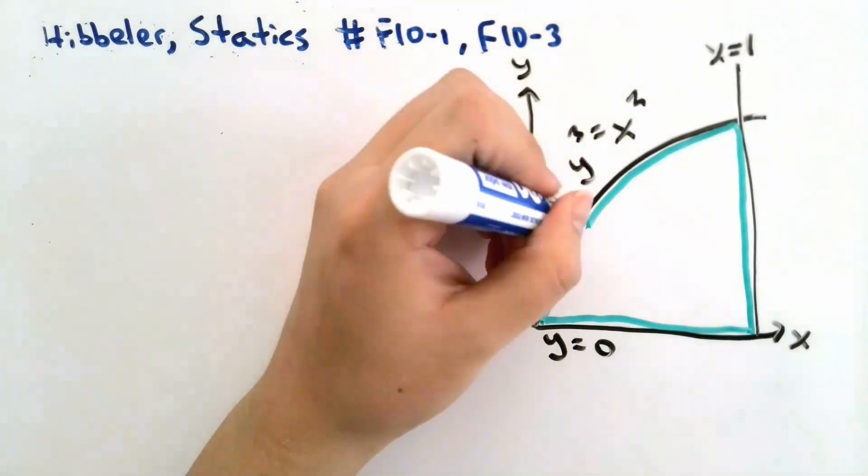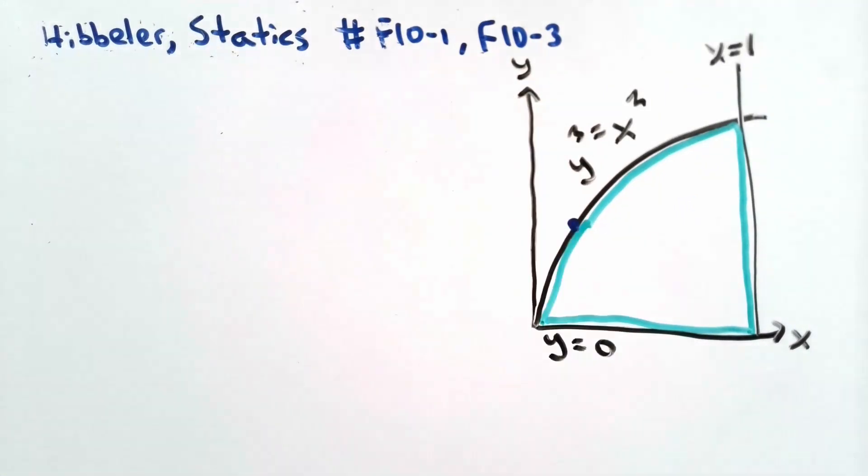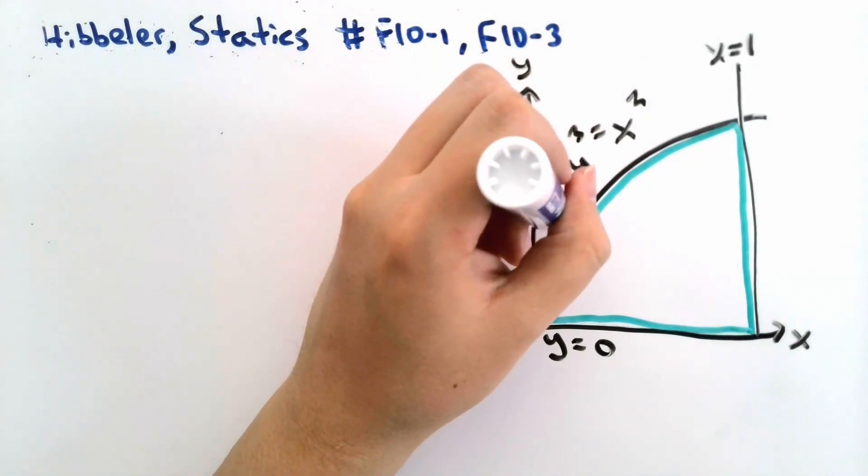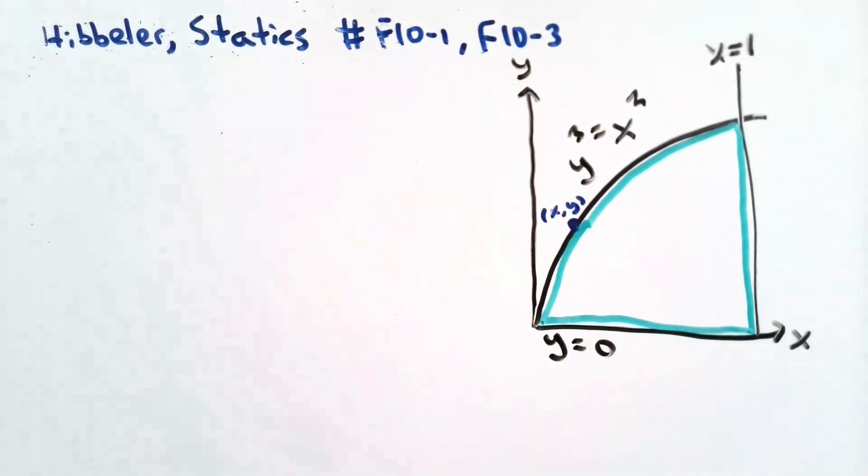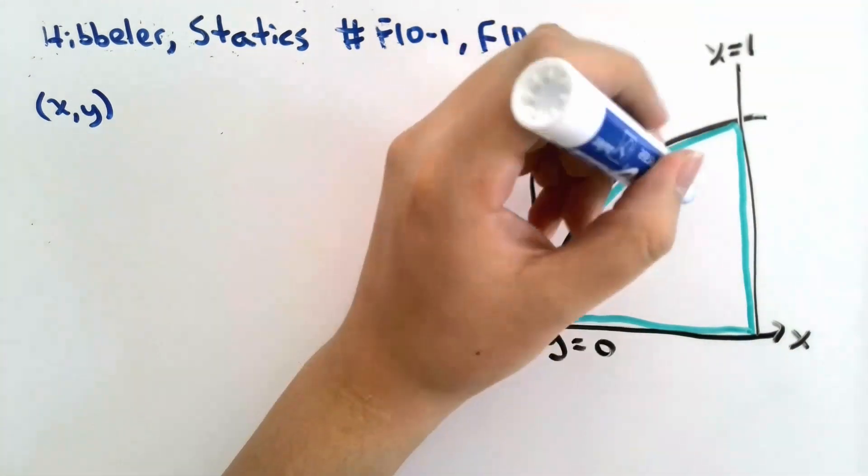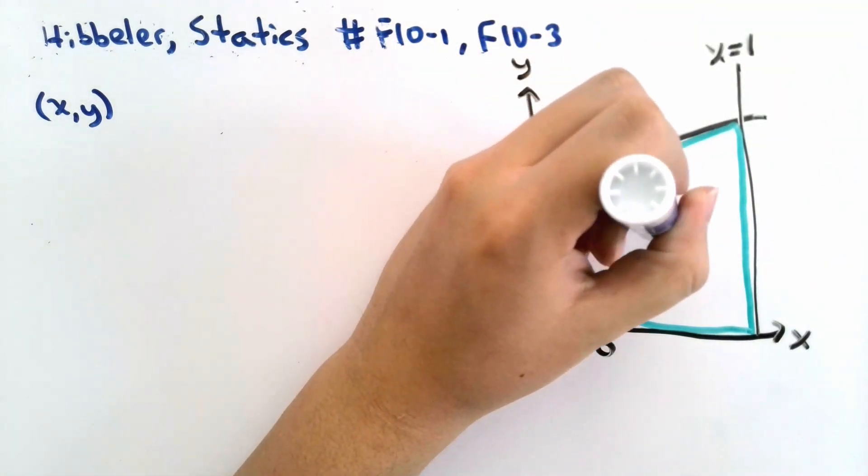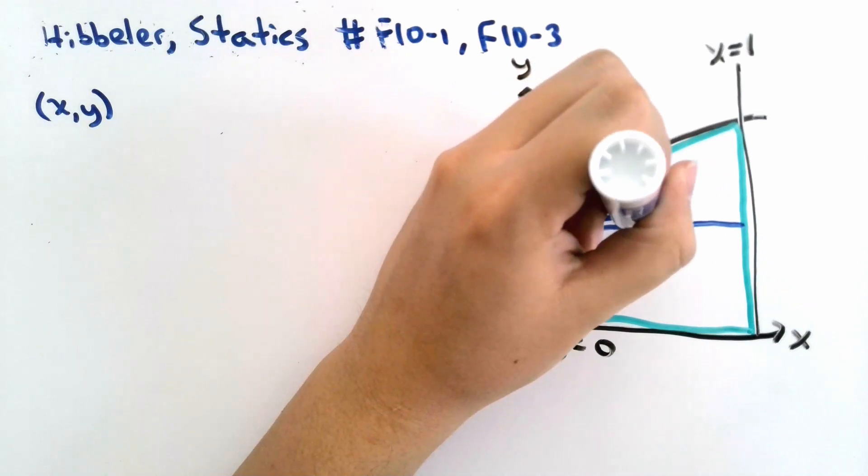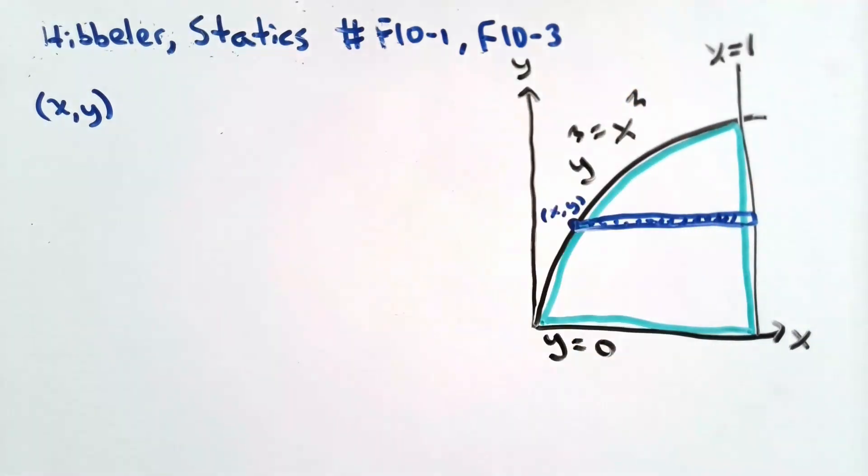Let me select a random point at the line y cubed equals x squared. This random point will have coordinates x and y. For this random point, I can take a differentially small rectangular element and evaluate the centroid of that element.